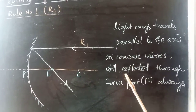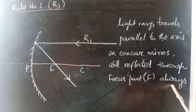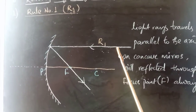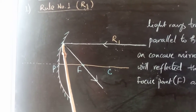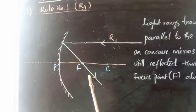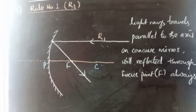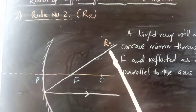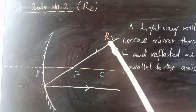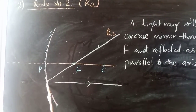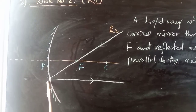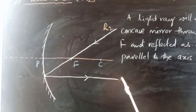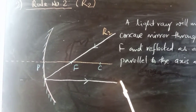Rule Number One: light rays travelling parallel to the axis on the concave mirror will always be reflected through the focus point. This is Rule Number One. Now Rule Number Two on the concave mirror: a light ray will go through the focal point and meet the concave mirror at the incident point, and it will always behave like a parallel light ray after reflection.